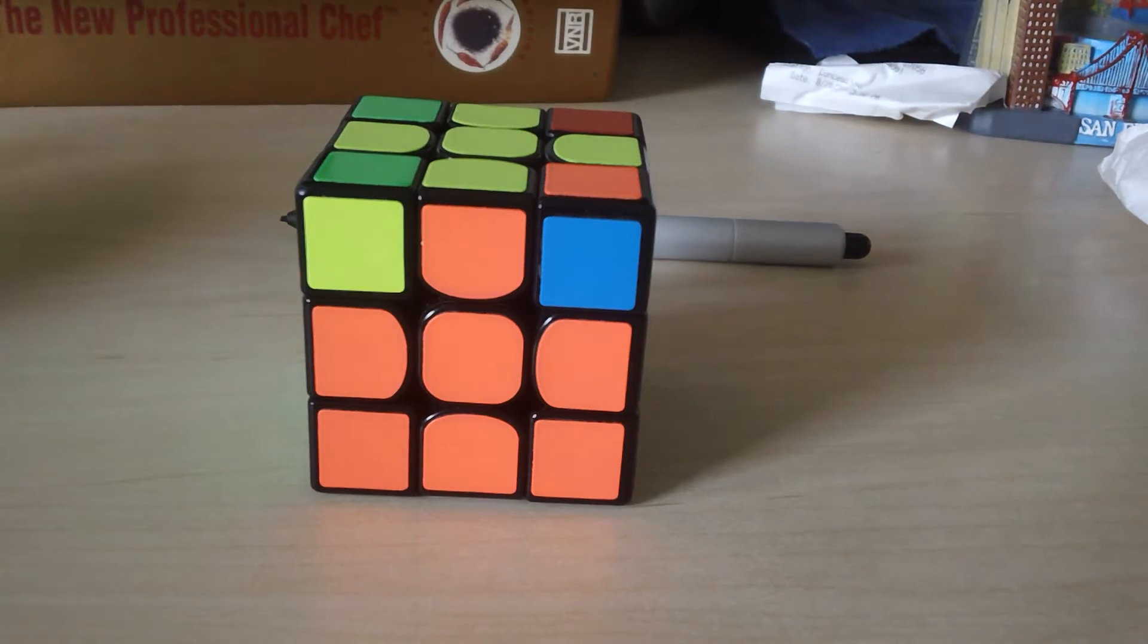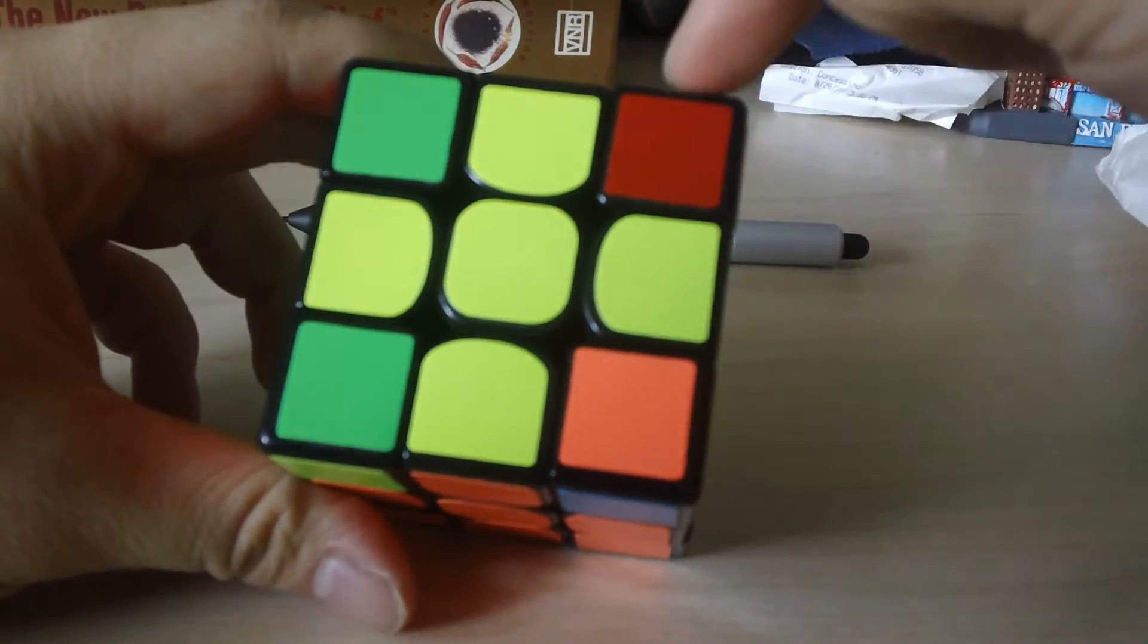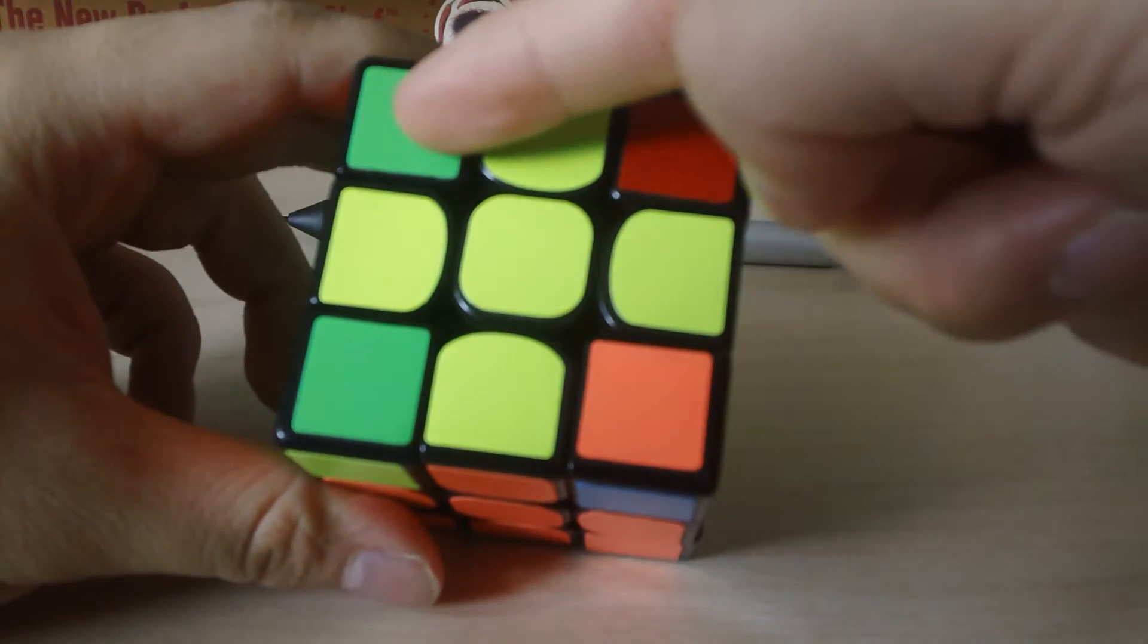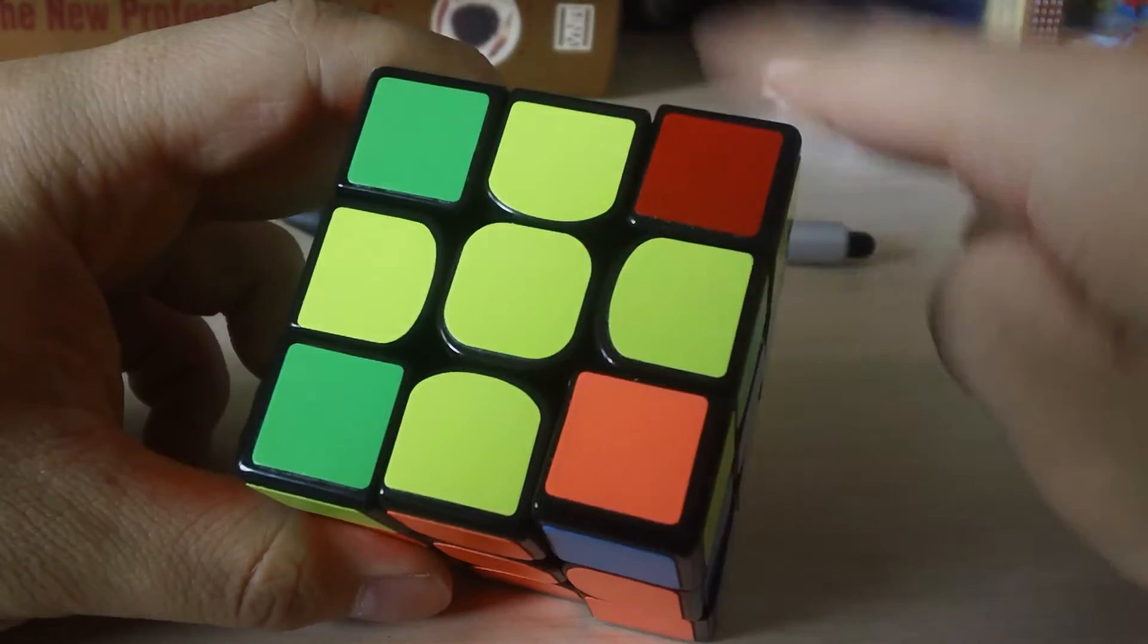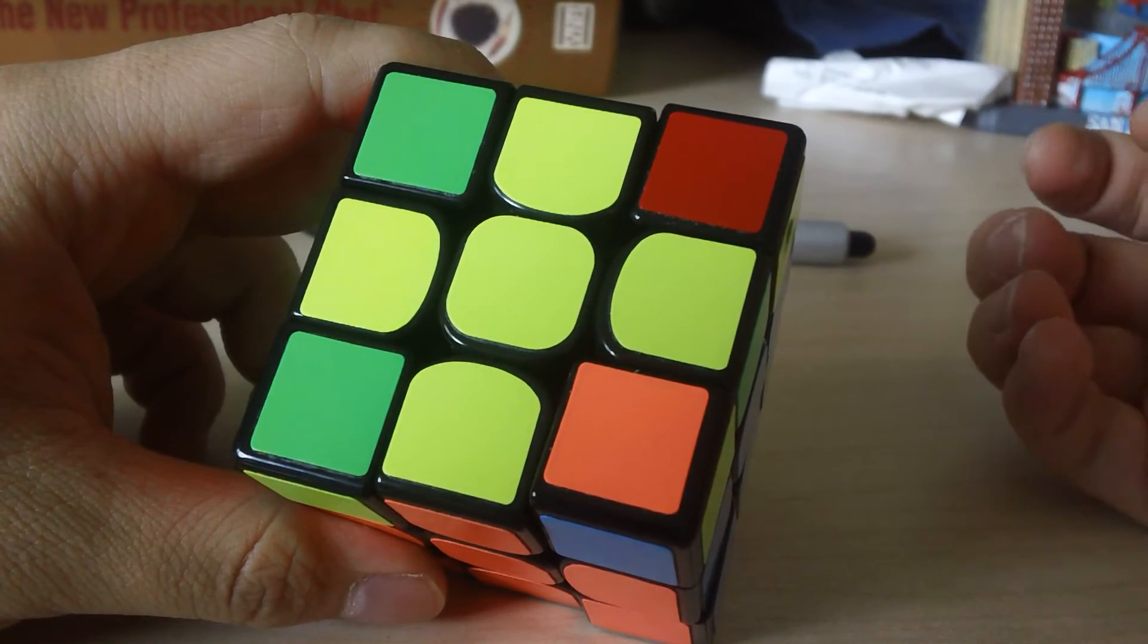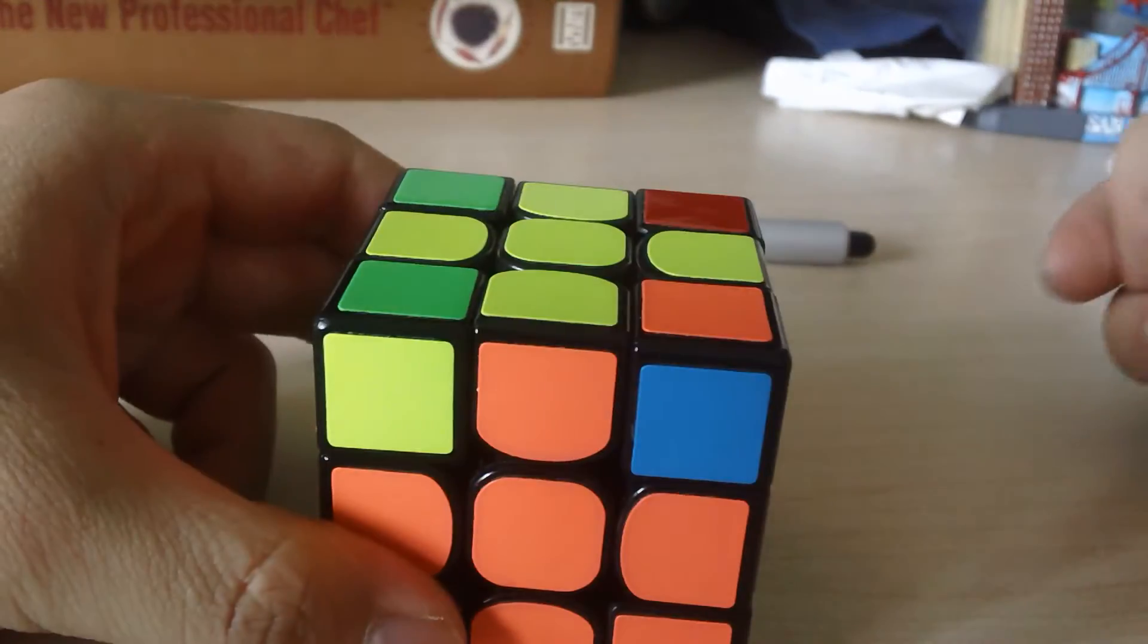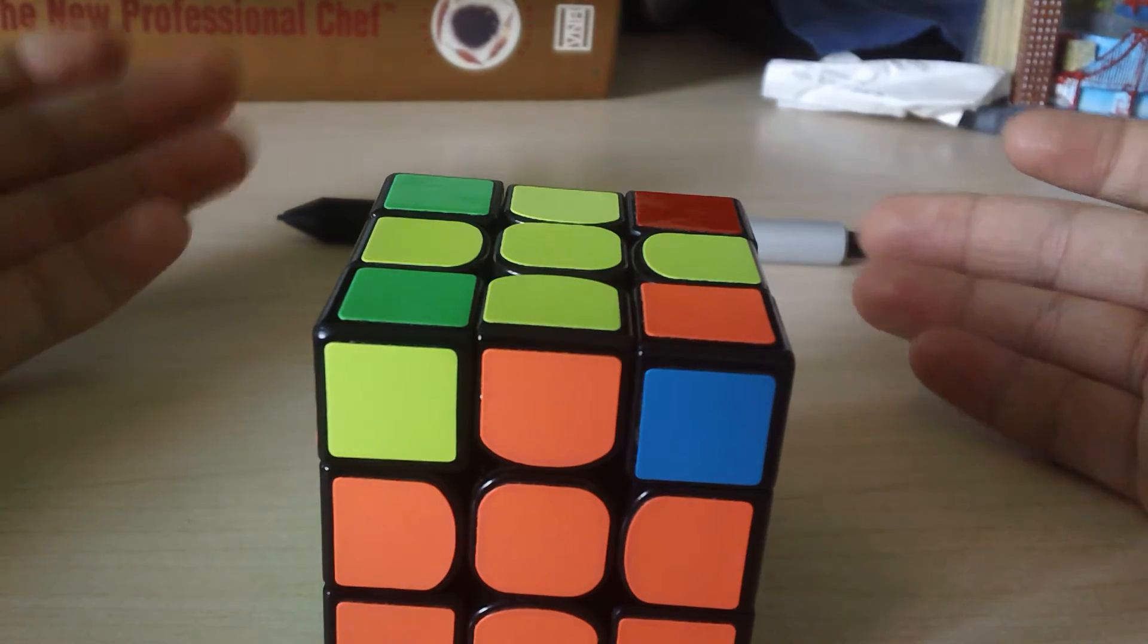The next step is going to be flipping the corners so that everything is the same color on the top face. Meaning that this, this, this, and this are all yellow in this case, so we have a completely yellow top. And the way we're going to do that is by applying the algorithm that we used to flip the corners in the very first layer. Except now we're not going to worry about if it's in the right place or not. We're just going to flip them.